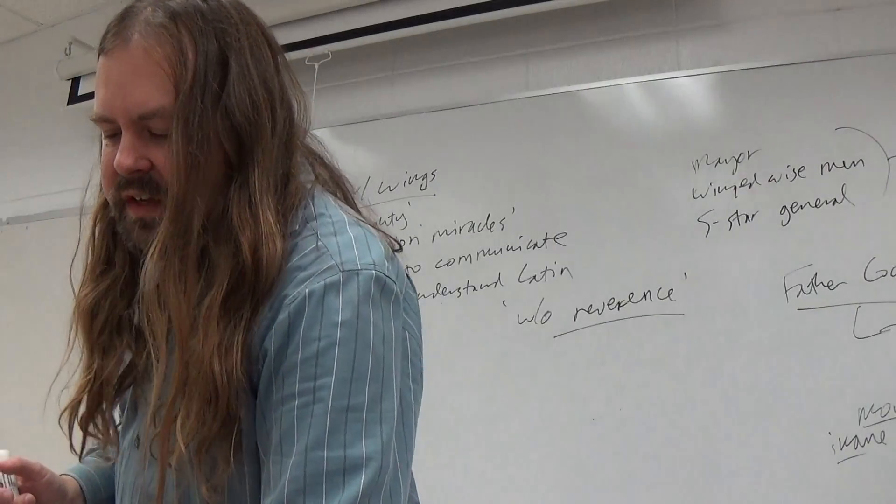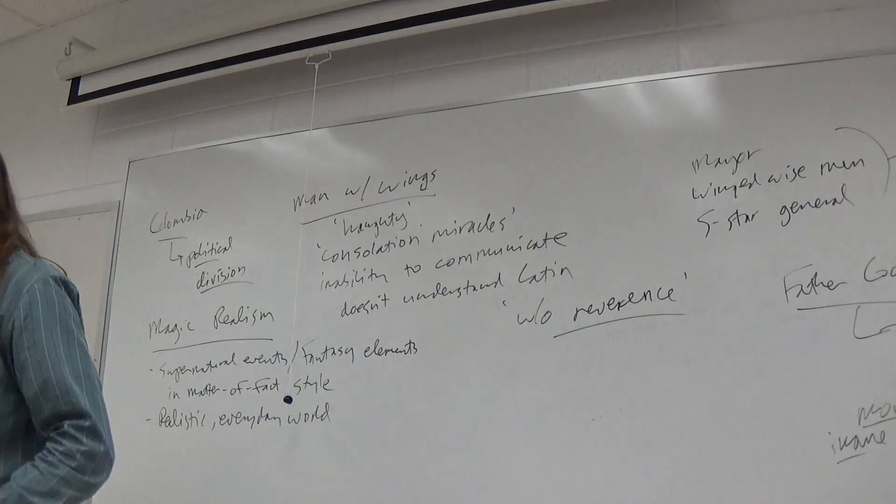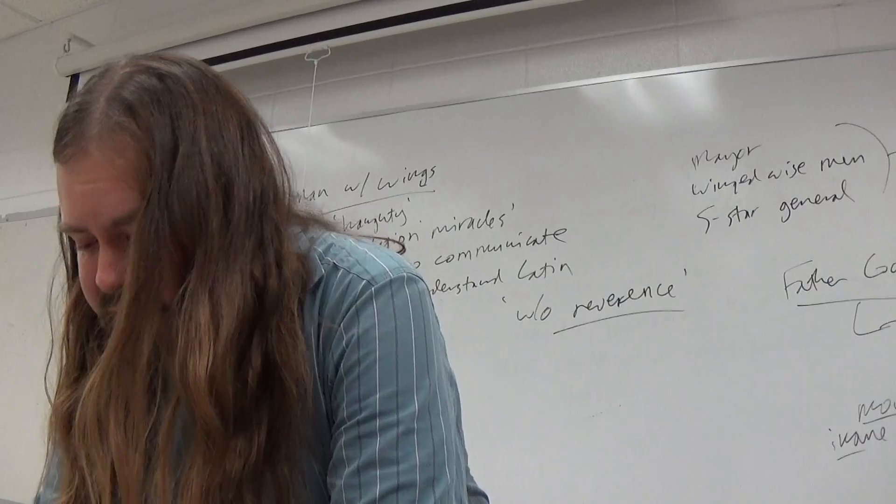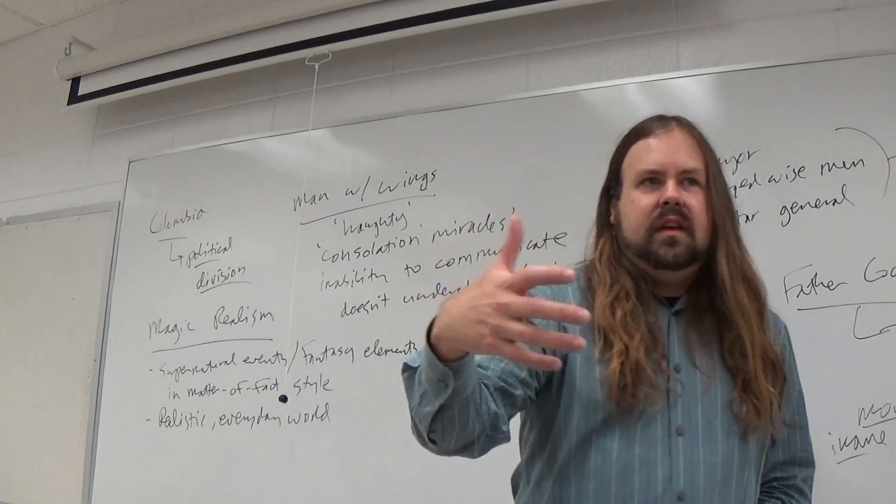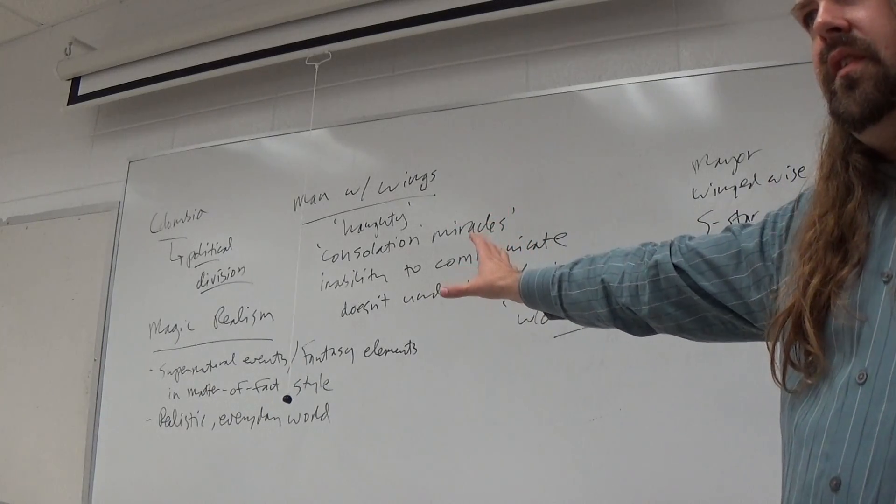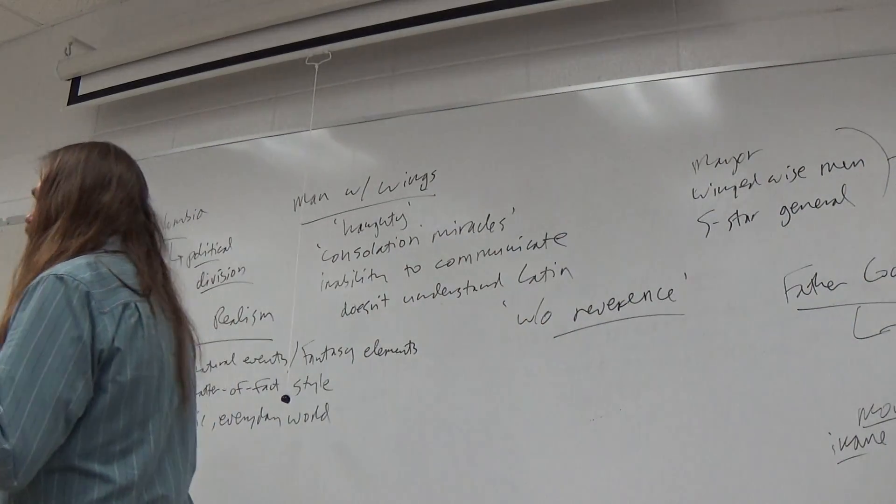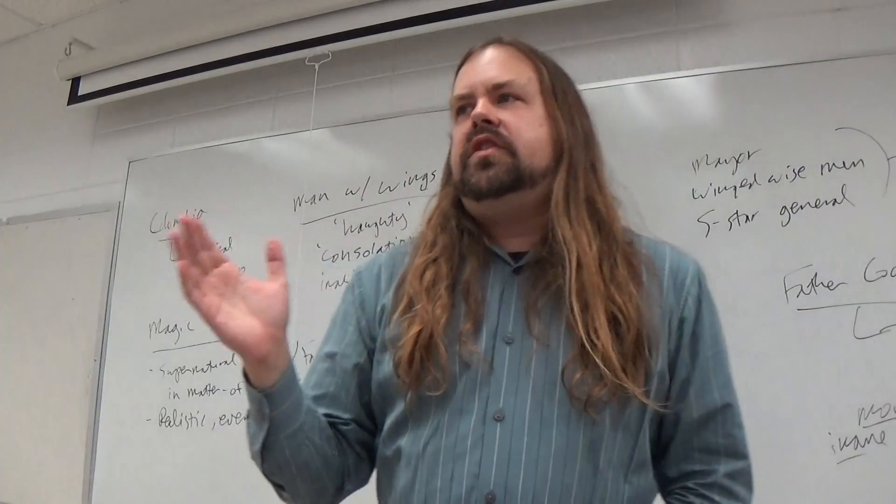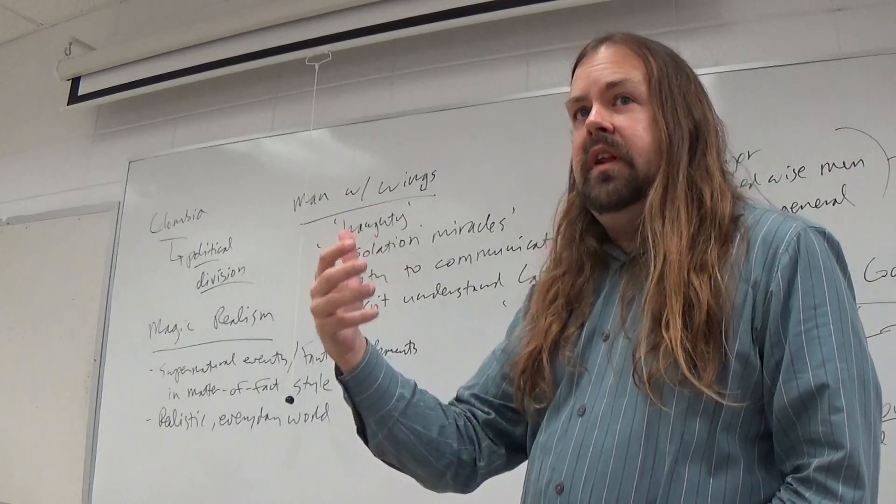The professor explains: 'In a magic realist's work, you will typically find supernatural events, or sort of fantasy elements, related in a very matter-of-fact, almost journalistic style, in a kind of realistic, otherwise realistic, everyday world. A student asks: Kind of like War of the Worlds, like H.G. Wells, would that kind of fit that category? Or is that just straight science fiction? No, that would be straight-up science fiction, because what Wells is doing with the super science or the alien being, right, is an invading force, like it's disruptive. It's something that destroys or threatens to destroy. Magic realism doesn't give an opinion, it's just relating facts.'